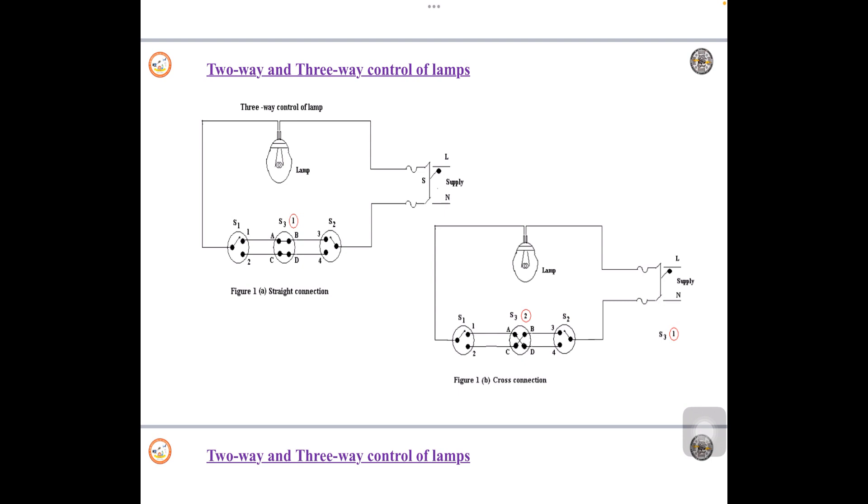Now there is an intermediate switch, the switch is S3. So S3 is connected in two different forms. One is straight connection, the other possible connection is cross connection as you can observe. That switch can also be called as intermediate connection.